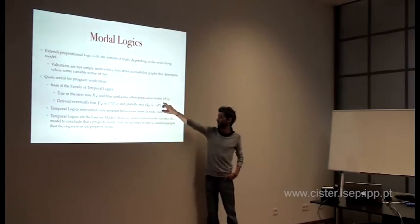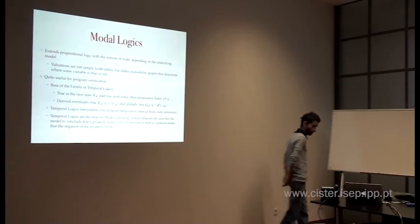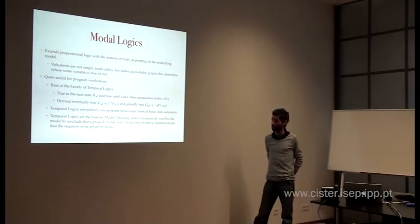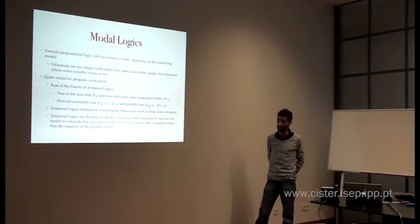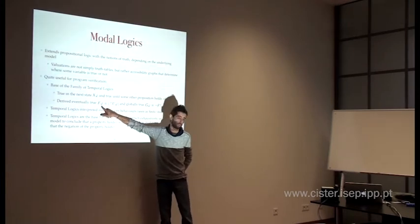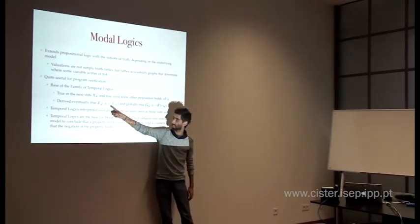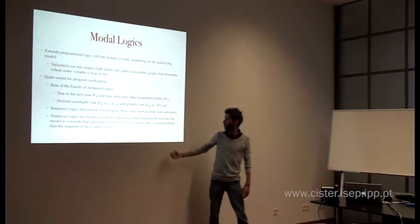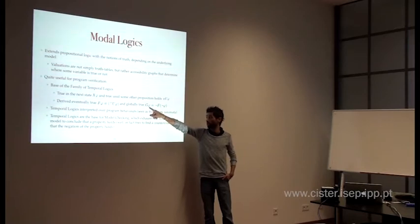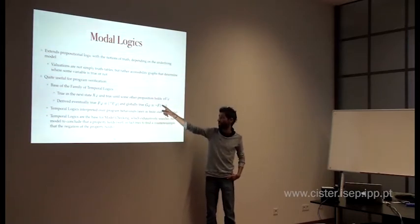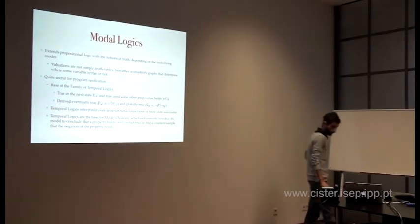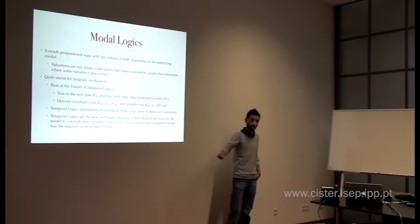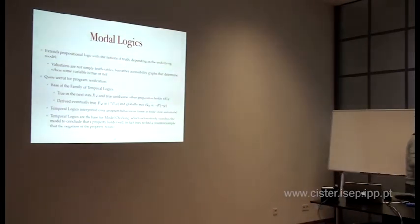Important temporal operators are: next state — checking if phi is true in the next state — and 'until' — psi is true until we reach the truth of phi. From these we can generate two important notions fundamental to real-time systems analysis: eventuality (safety) — will phi eventually hold in the future? — and liveness — is it globally true that phi holds, meaning we will never find a future state where the negation of phi holds? This is the very basis of model checking.